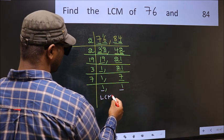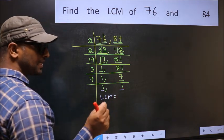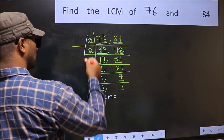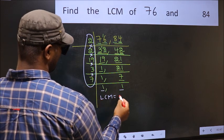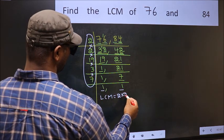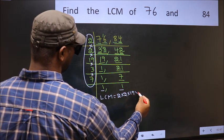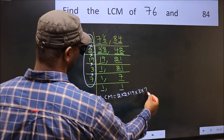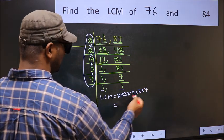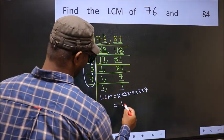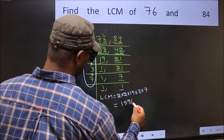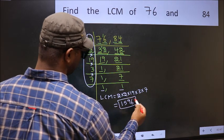So our LCM is, LCM is the product of these numbers. That is 2 times 2, times 19, times 3, times 7. When we multiply these numbers, we get 1596 is our LCM.